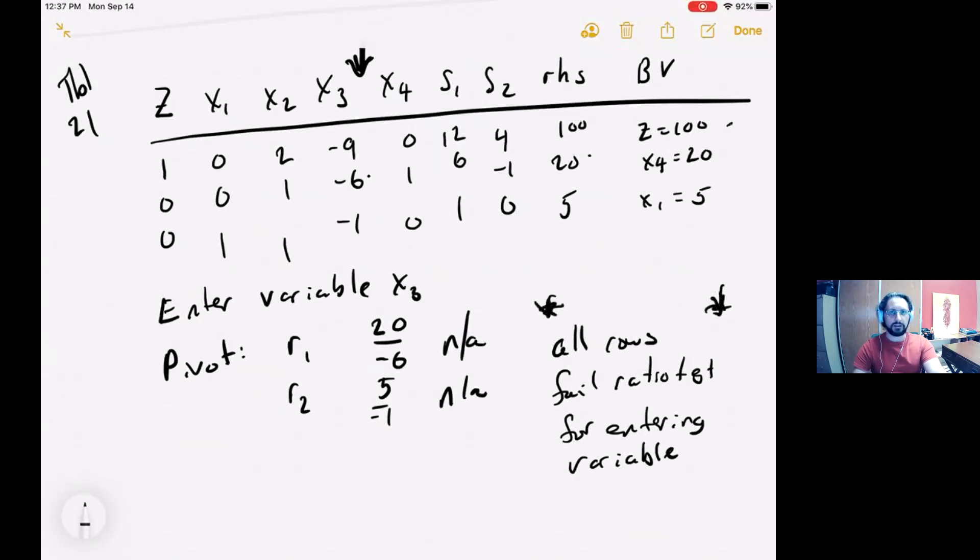When we perform the simplex method, the next question you might have is: we know the LP is unbounded, how do we actually go about and generate unbounded values? So the current setup for this LP gives us z equals 100 as an objective function value, but if the LP is unbounded, I should be able to increase it. I should be able to make z equal 100, 200, 300, any value I want as long as I stay in the feasible region. How do I guarantee that I stay in the feasible region?